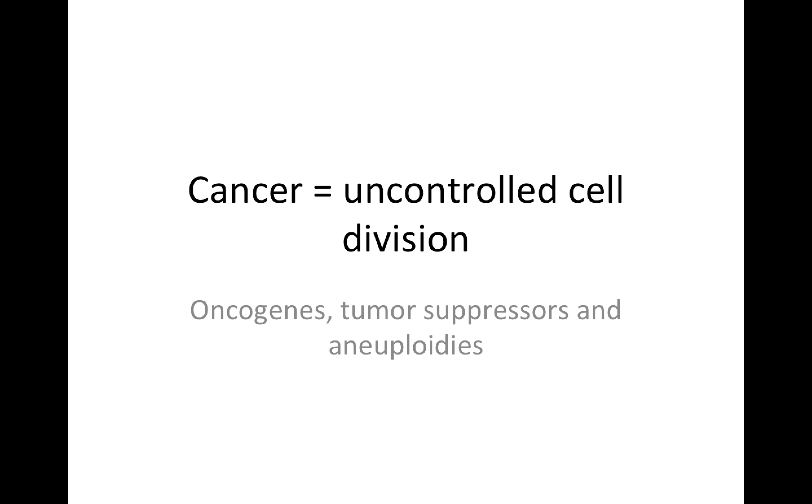In this lecture, I'd like to talk about the genetics of cancer. We're going to talk about oncogenes, tumor suppressors, and aneuploidies. But the first thing I really want to point out, so much that I've titled the lecture this, is that cancer is uncontrolled cell division.